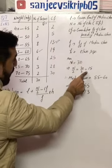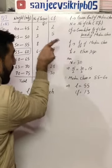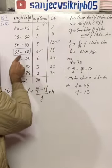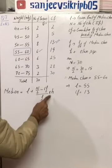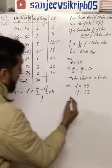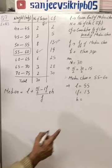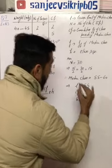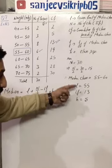Where N by 2 lies, that becomes the median class. The one above it gives CF. Its frequency will be 6. And one term remains, H, class size. You can see class size is 5.